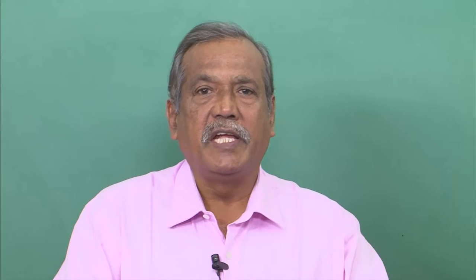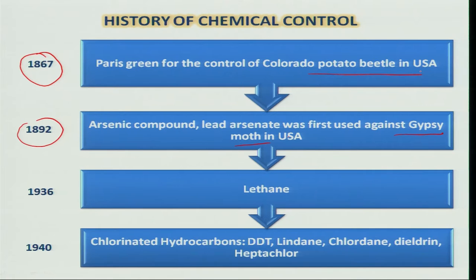Before going further we should know the history of pesticides. Before the synthesis of new insecticides, inorganic pesticides were in use. As far back as 1867, Paris green was used for the management of Colorado potato beetle in the USA. Similarly, in 1892, lead arsenate was first used against gypsy moth control, a temperate tree pest in the USA. In 1936, lithium was used for management of many foliage-feeding insects.